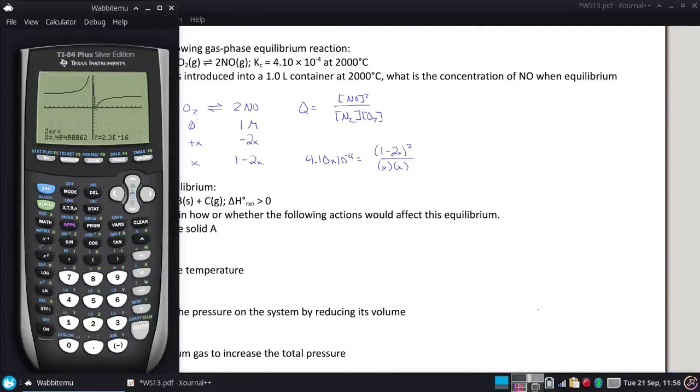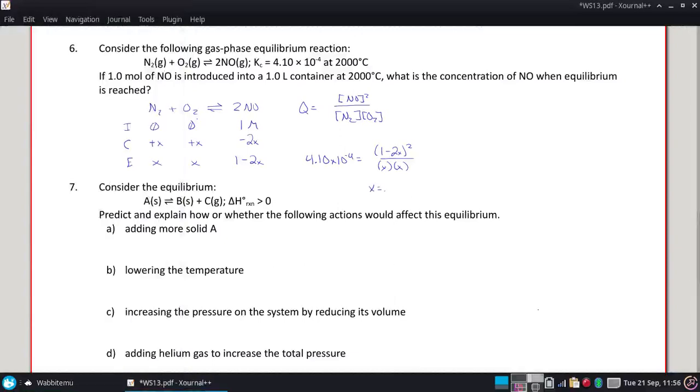I feel good with just two significant figures, so 0.49. All right, so it wants to know the NO concentration at equilibrium. That would be 1 minus 2 times 0.49. There's going to be almost none.